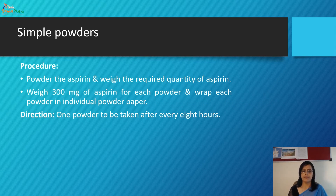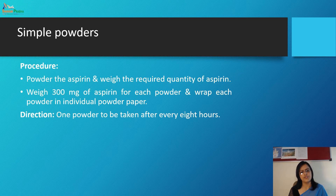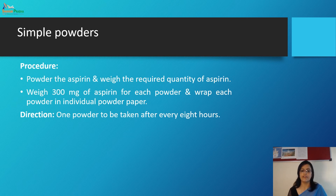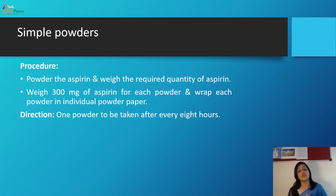For example, to prepare a powder of aspirin: powder the aspirin, weigh the required quantity — say 300 mg of aspirin for each powder — and wrap it in individual powder paper with directions such as 'one powder to be taken after every eight hours.' This is a traditional way of dispensing and compounding; nowadays, this kind of powder dosage form is not commonly administered.